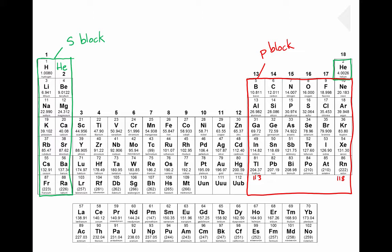Even though the discoverer of the periodic table didn't notice this, we see an interesting pattern. How many columns of elements are there in the S block? It looks like there are two columns of S block elements. What about the P block? It looks like there are six columns in the P block. I wonder how many columns we'll find in the D block. Here is the D block of elements, and it looks like there are 10 columns.